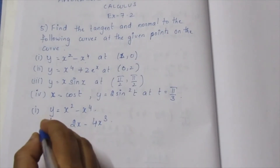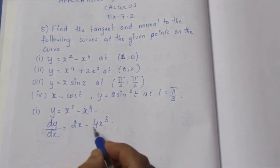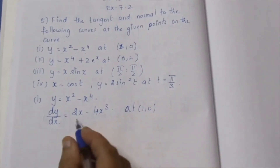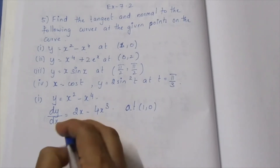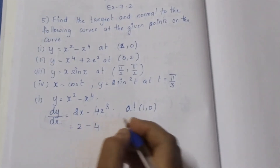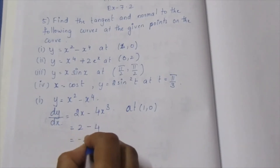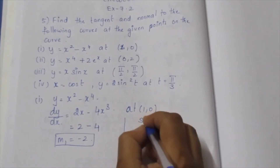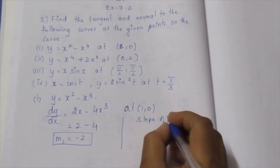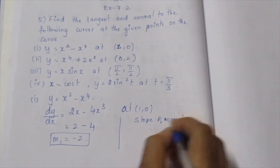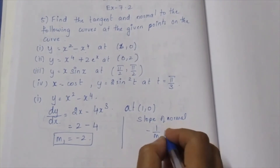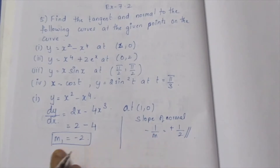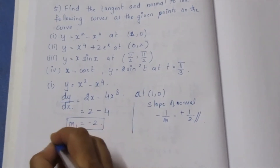This is the slope of the tangent. At point (1, 0), we substitute: 2 minus 4, which gives the slope of the tangent. Now, the slope of a normal — for a normal, the formula is minus 1 by m. So minus of minus gives plus 1 by 2. This is the slope of the normal.